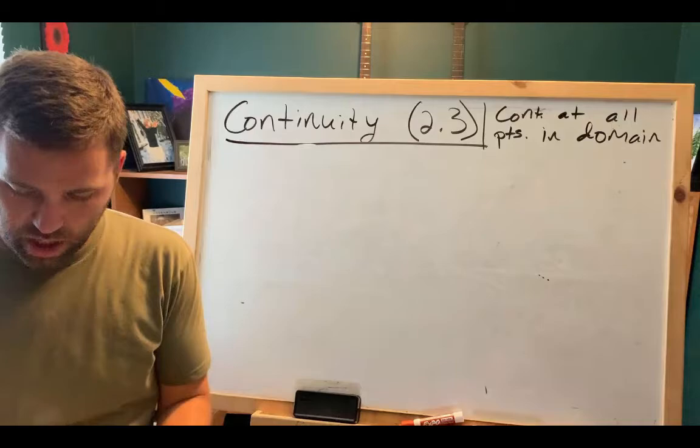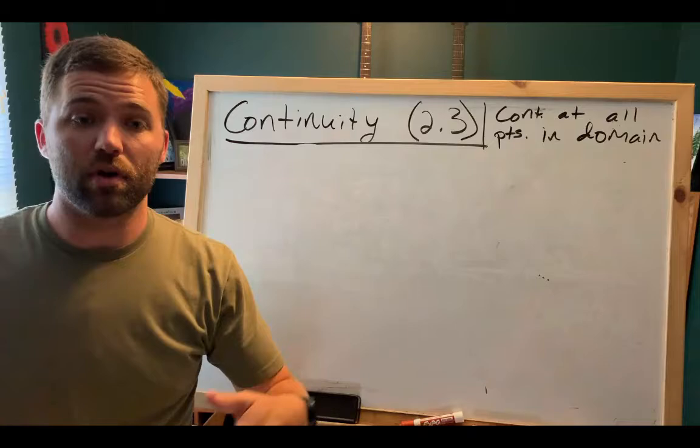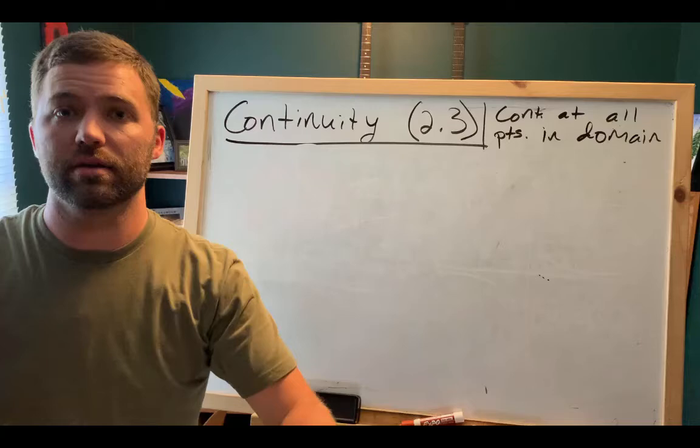Just because a function has a discontinuity somewhere on the x-axis does not make it a discontinuous function. You're going to want to write that down: a continuous function is one that is continuous at all points in the domain. I'll also point out that 1 over x is not continuous on the interval from negative 1 to 1, because there's a difference between continuous on an interval and a continuous function in general.